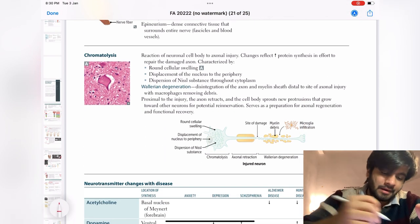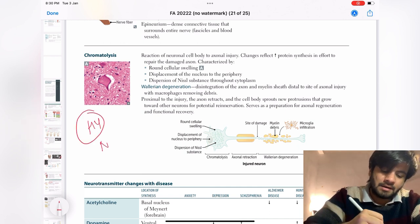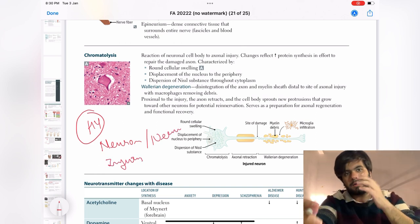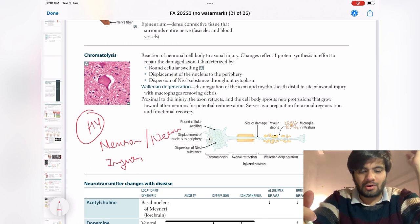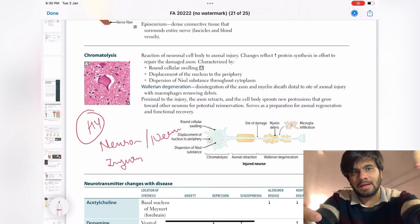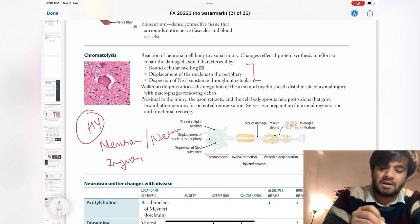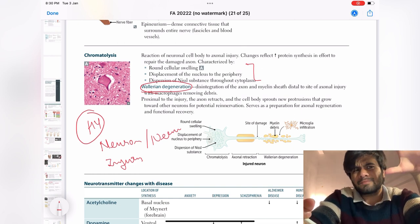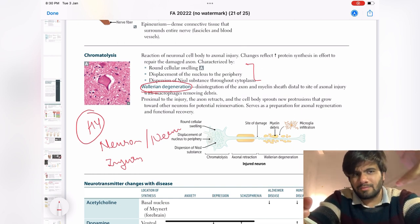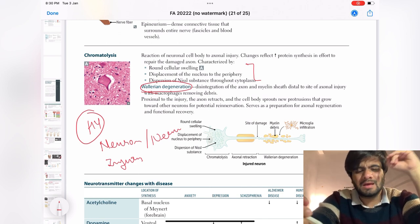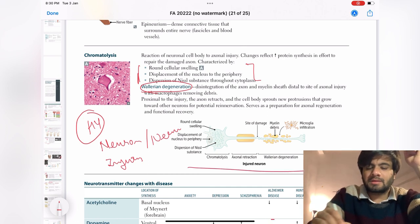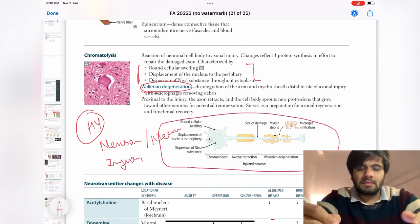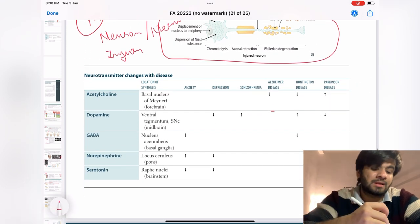Moving to chromatolysis — this is high yield. They have explained nerve injury here: what happens when the distal part of a nerve is damaged versus the proximal part, what is chromatolysis, and what are the pathological changes. Wallerian degeneration is very important. They will give you a case and say the axon is damaged proximally or distally — just remember these three key points. This diagram is very helpful if you can't recall. Moving to neurotransmitter changes with disease — you should know which disease has deficiency of which neurotransmitter, and the location of centers is very important.